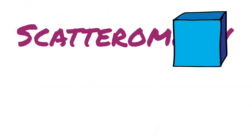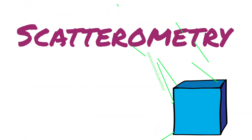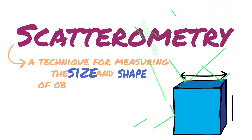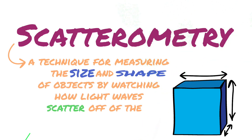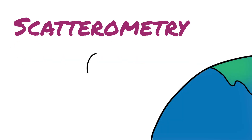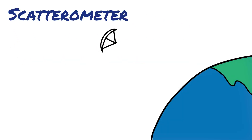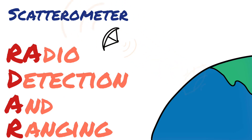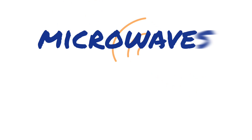That's where scatterometry comes in. Scatterometry is a technique for measuring the size and shape of objects by watching how light waves reflect, or scatter, off of them. Looking at the earth from space, a scatterometer uses radar to send pulses of light down to the surface and measures how much bounces back. To study ocean winds, we use a very specific kind of light: microwaves.